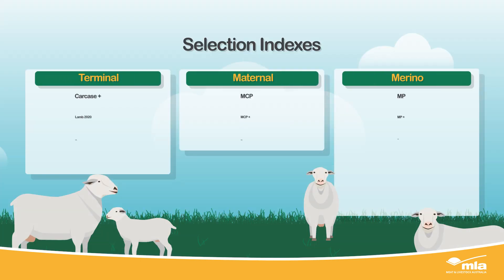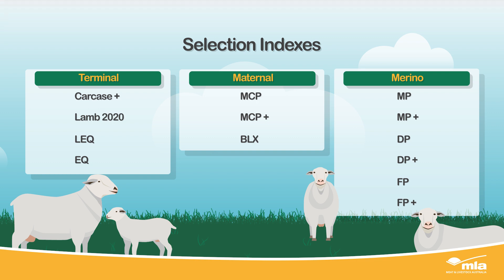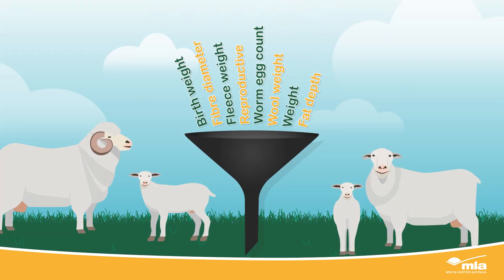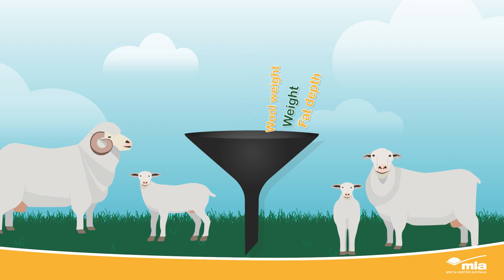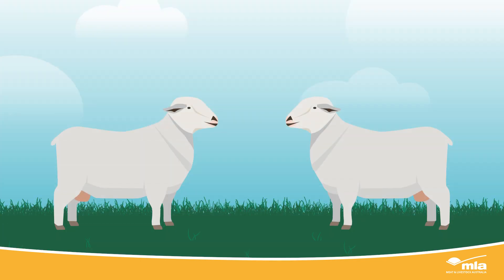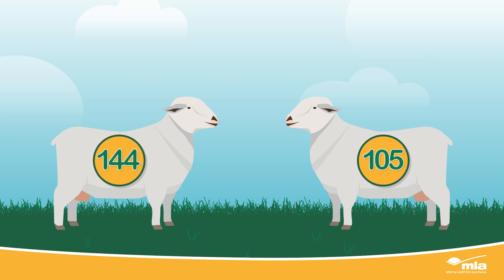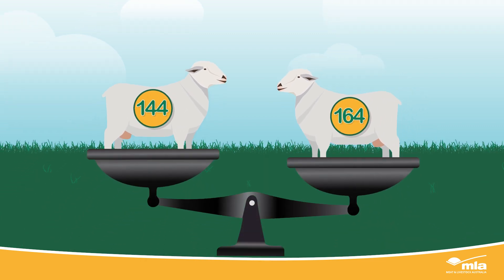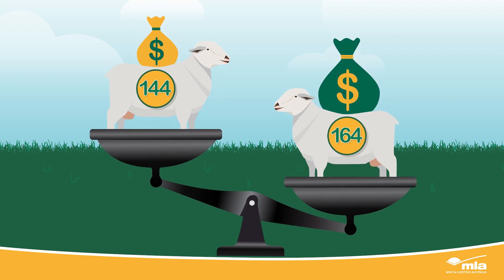This is where selection indexes come in. Indexes make selection easier by balancing and weighing ASBVs into a single figure for different production systems. Using just one number, they rank animals by prioritising traits that drive the most profit for the production system and market you're targeting. The higher a sheep's index value, the higher its overall economic contribution to that production system.